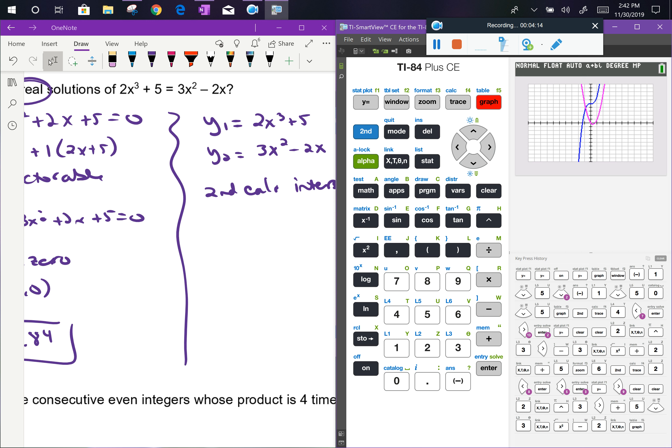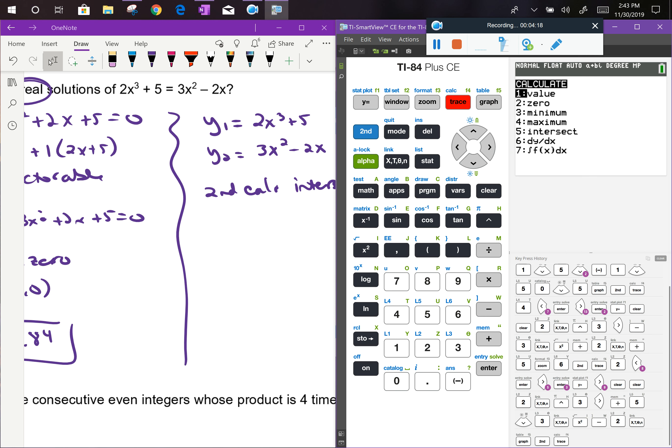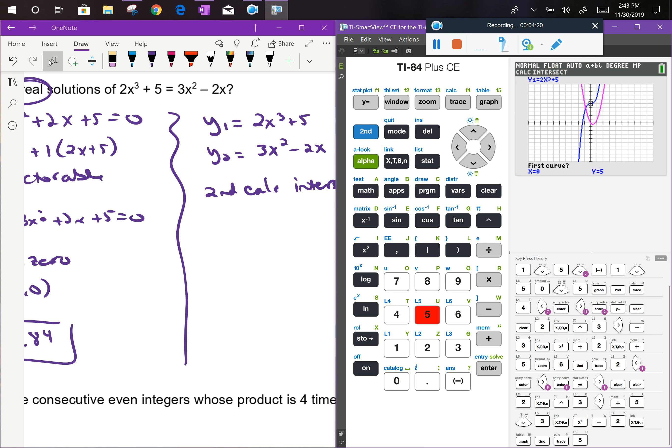If I do second calc, and I choose intersect, I'm going to go... That's my first curve. That's my second curve. Again, I don't care about guessing. I just do an extra equal sign. Notice the x value of the intersection is the very same number that I got when I did second calc zero before.